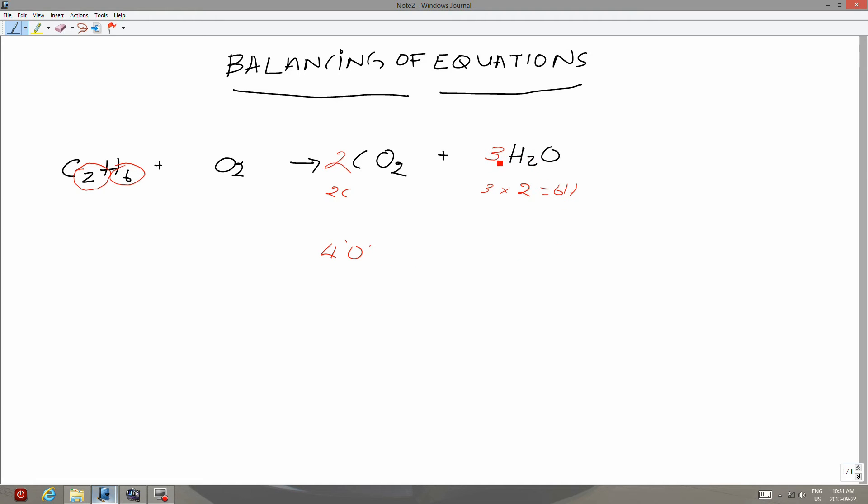Similarly, in water, the coefficient is three and the subscript of oxygen is one. Therefore, three times one equals three oxygen atoms. So here I have two times two makes it four oxygen atoms. And here on the right, I have three. So totally, there are seven oxygen atoms on the product side.